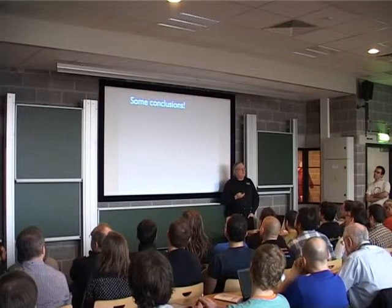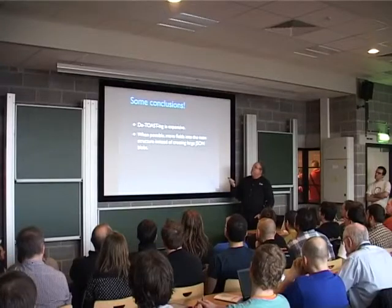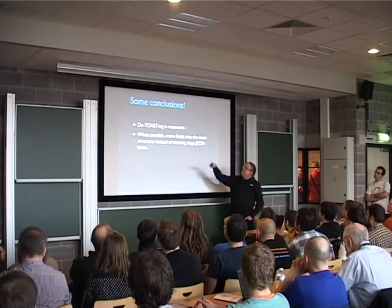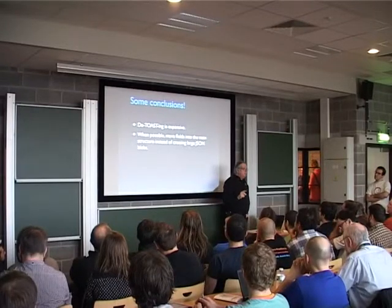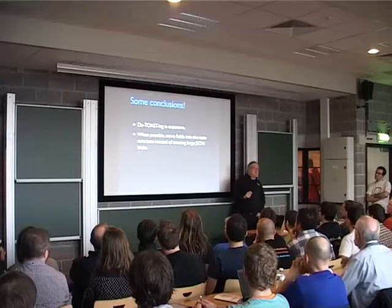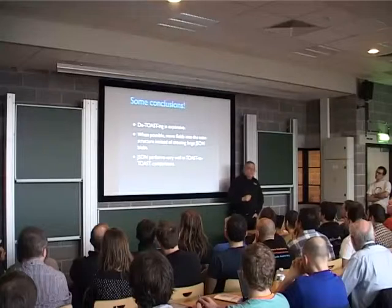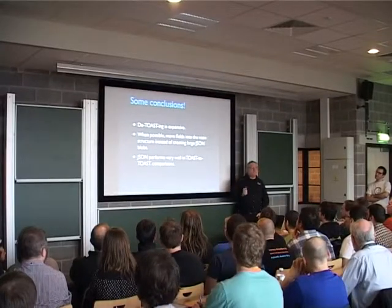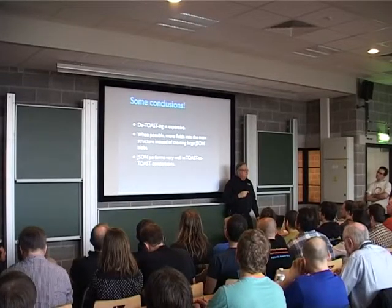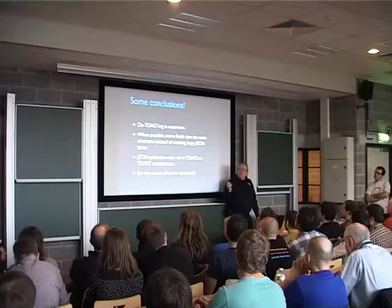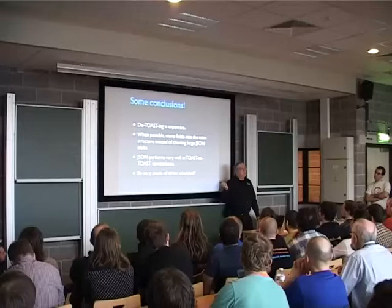So what do we know? De-toasting is expensive. When it's possible, move fields to the main structure instead of creating large JSON blobs — first, you keep your JSON blob size down which prevents having to spill to toast, and it's just faster to return things out of the relational structure. If toasting is inevitable, JSON performs completely fine — nothing to worry about in terms of performance. Also, be aware of the overhead on your driver — that can often swamp everything else that's going on.